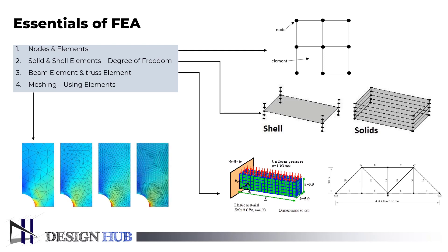Now let's learn what is meshing, the fourth essential element of FEA. One of the most crucial steps in carrying out an accurate simulation using FEA is meshing. A mesh is made up of elements that have nodes, which represent the geometry's shape. Depending on the type of analysis needed, you can mesh the elements fine or coarse. The calculation and processing of the results will take longer as the meshing becomes finer. However, the results will be more accurate the finer the meshing.